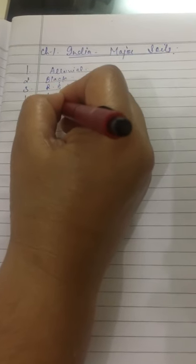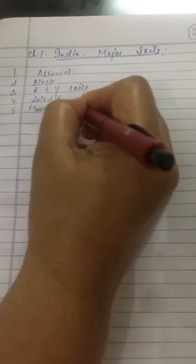India have 6 types of different soils. Number 1, Alluvial Soil. Number 2, Black Soil. Number 3, Red and Yellow Soils. Number 4, Laterite Soil. Number 5, Mountain Soils. And number 6, Arid Soils.